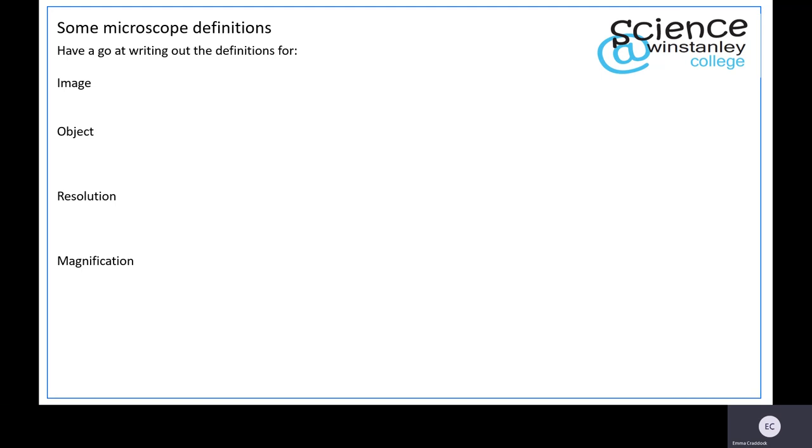So we've seen how a microscope works, but you need to know some microscope definitions as well. Have a go at writing out the definitions for image, object, resolution, and magnification. Pause the video whilst you do this and then check your answers.